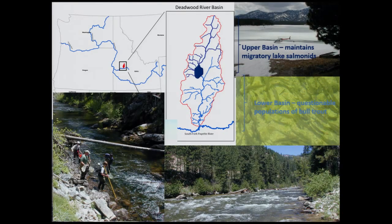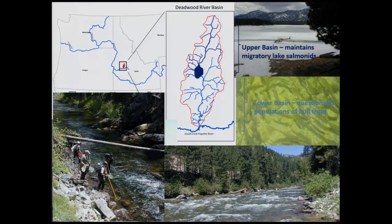Why did we want to study these problems and focalize on the Deadwood? Deadwood has the characteristics of being a simple reservoir. Its major purpose is to provide irrigation flows. However, it is part of several reservoirs in Central Idaho managed together to provide electrical power, flood protection, irrigation flows, and also recreational water sports.